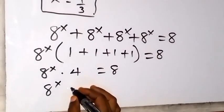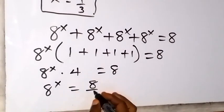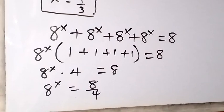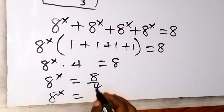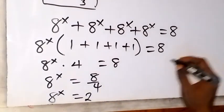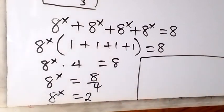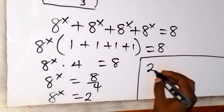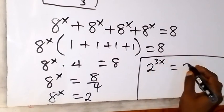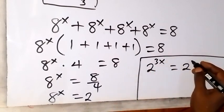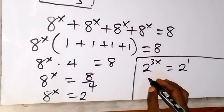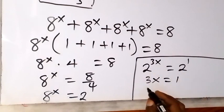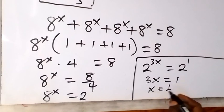Dividing both sides by 4, we have a^x equals 8 over 4, which is 2. We can then change it to base 2 as well. So 2^(3x) equals 2, and 2 is the same as 2^1. Since the bases are the same, we equate the powers: 3x equals 1. Dividing both sides by 3, x equals 1 over 3.